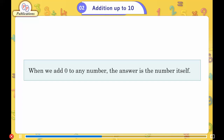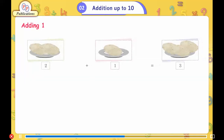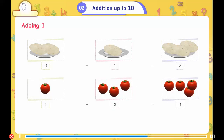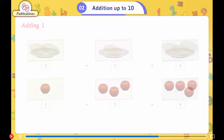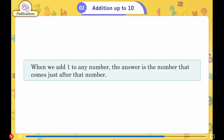Adding 1. 2 plus 1 is equal to 3. 1 plus 3 is equal to 4. When we add 1 to any number, the answer is the number that comes just after that number.